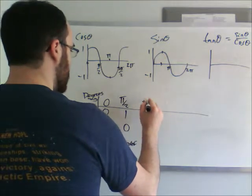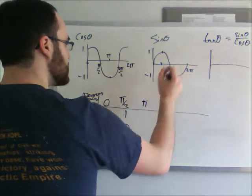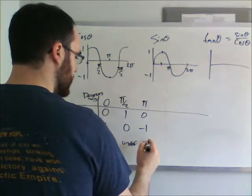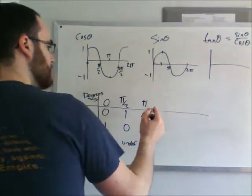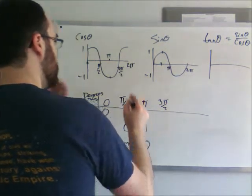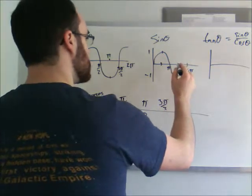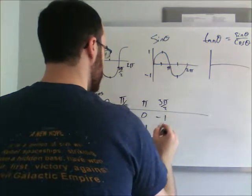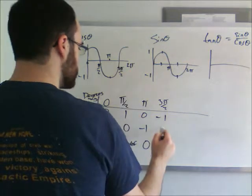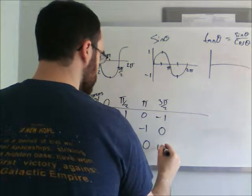Then we have π after that. So π is 0 for sine, and negative 1 for cos, which is 0 over negative 1 is still 0. Then we have 3π/2. So 3π/2 for sine is going to be here, which is negative 1. And 3π/2 for cos is going to be 0. Negative 1 over 0 is also undefined.